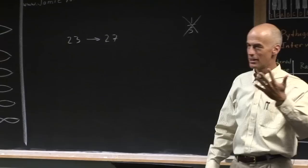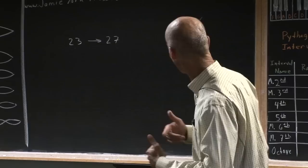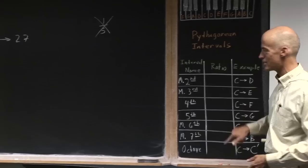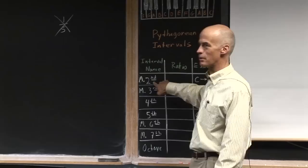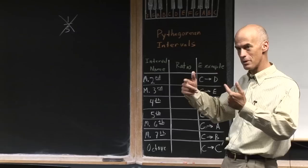When we talk about the second—the interval of the second—going from a C to a D, that's really one step. One step, so I go from C to D—that's one step. We call that the major second. That M stands for major. And then we have the major third, which is going from a C to a D to an E.